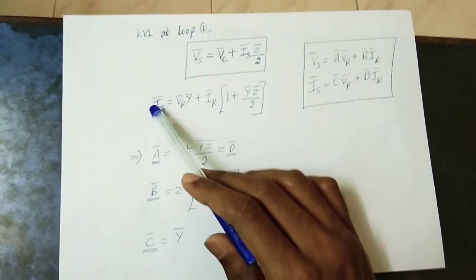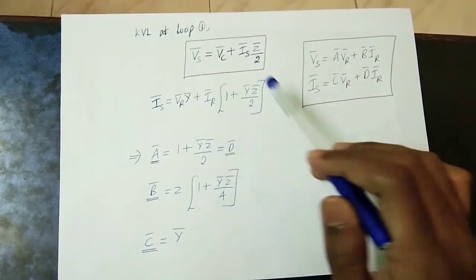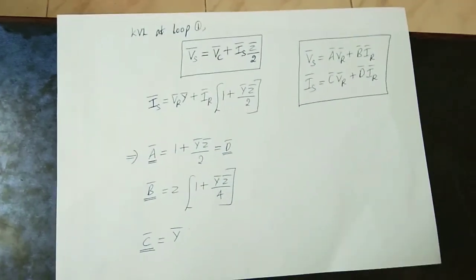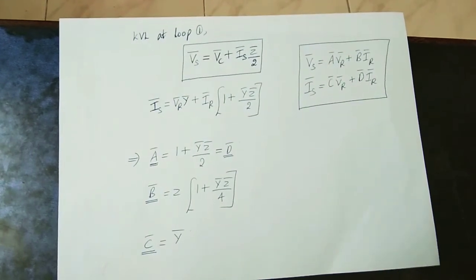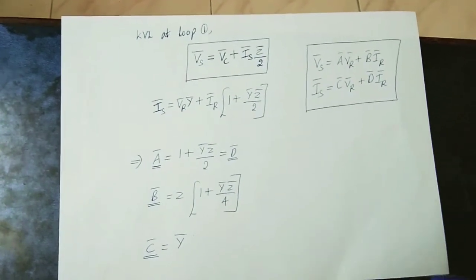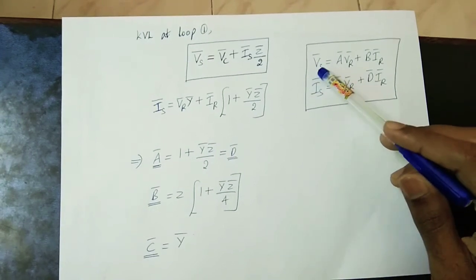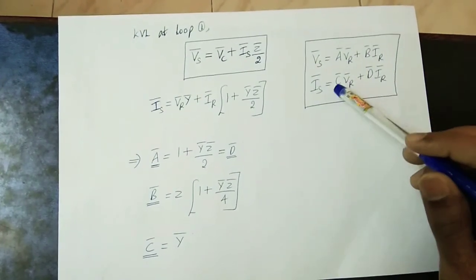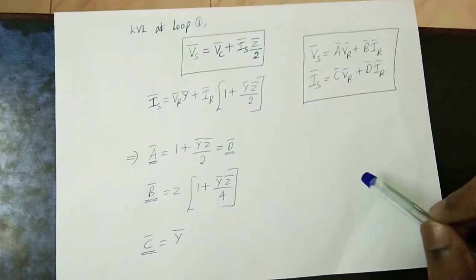If we substitute the values of Vc and expand in terms of Vr, Ir, and Y, and then compare with the ABCD basic equations — VS is equal to A into VR plus B into IR, and IS is equal to C into VR plus D into IR — we can identify all four parameters.